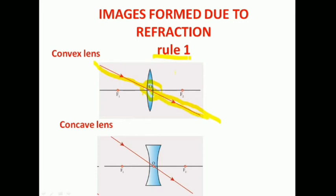In the case of a convex lens, an incident ray passing through the optic center of the lens will move undeviated after refraction. The same rule applies for a concave lens also. When the incident ray comes to the optic center, after refraction, it moves undeviated. This is the first rule.